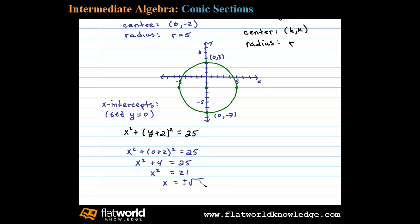Applying the square root property, we have x equals plus or minus the square root of 21. So we have x-intercepts at negative square root of 21 comma 0 and positive square root of 21 comma 0.